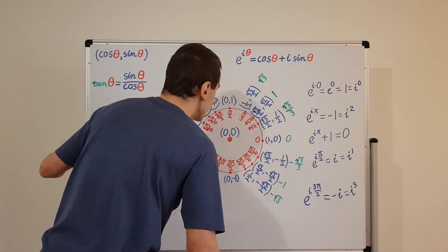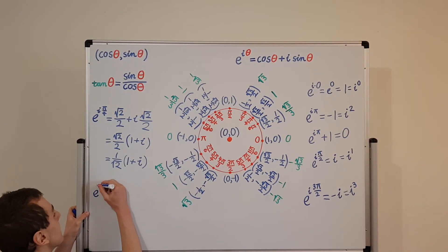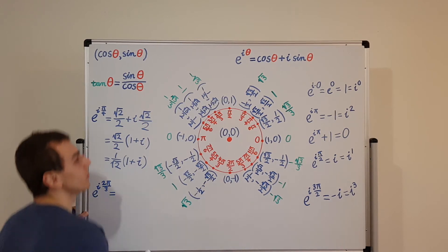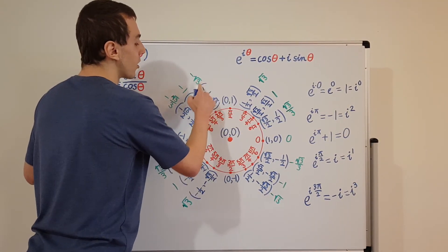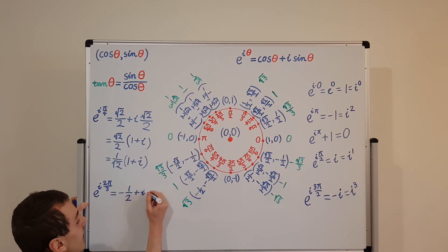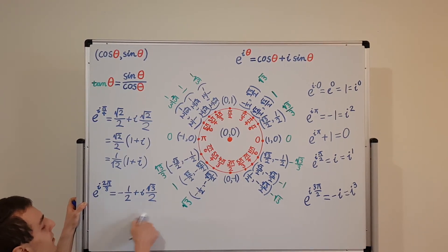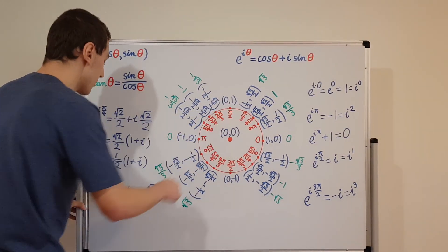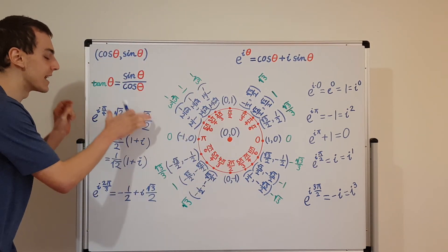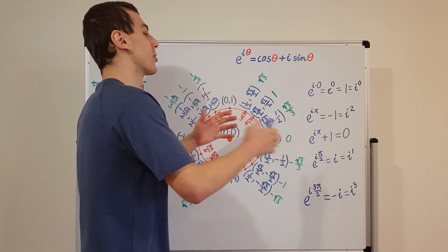Let's pick another point — two pi on three. If we put e to the i times two pi on three, our real component is minus one half and our imaginary component is root three on two. So we have minus one half plus i times root three on two. This is the polar form on the left and the Cartesian form on the right. The reason I've picked these special values is they always give us nice representations in both polar and Cartesian form — it's rare to find points that are beautiful in both.